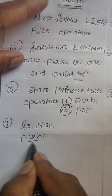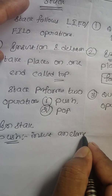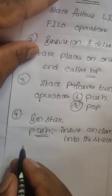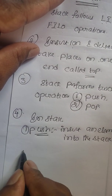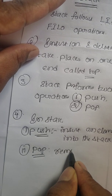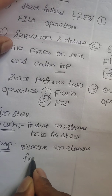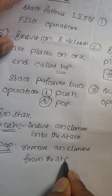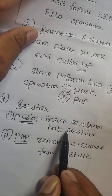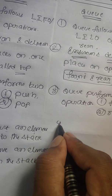The fourth difference: in stack, push means insert an element into the stack, and pop means remove an element from the stack. So these are the two operations — push means insert, and pop means remove.